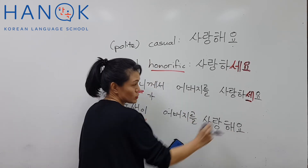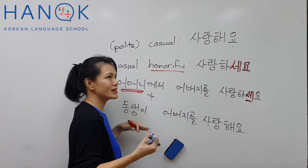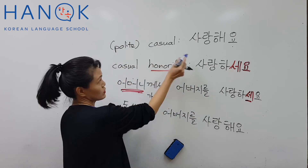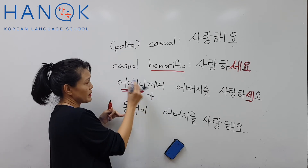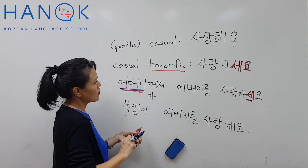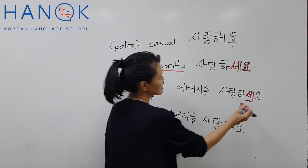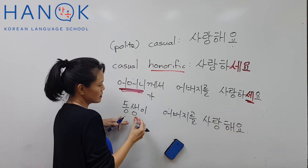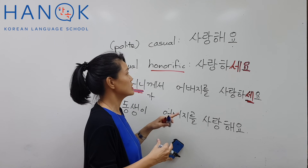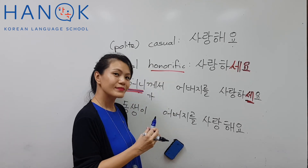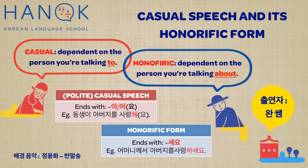So if you're both in a casual setting, talking to your classmates, you can use the casual form. But when talking about someone doing an action who you want to respect — like your mother — you use 어머니께서 사랑하세요. And here: 동생이 아버지를 사랑해요. I hope this explains the difference between casual and honorific form. Thank you. Bye — I'll see you next time!